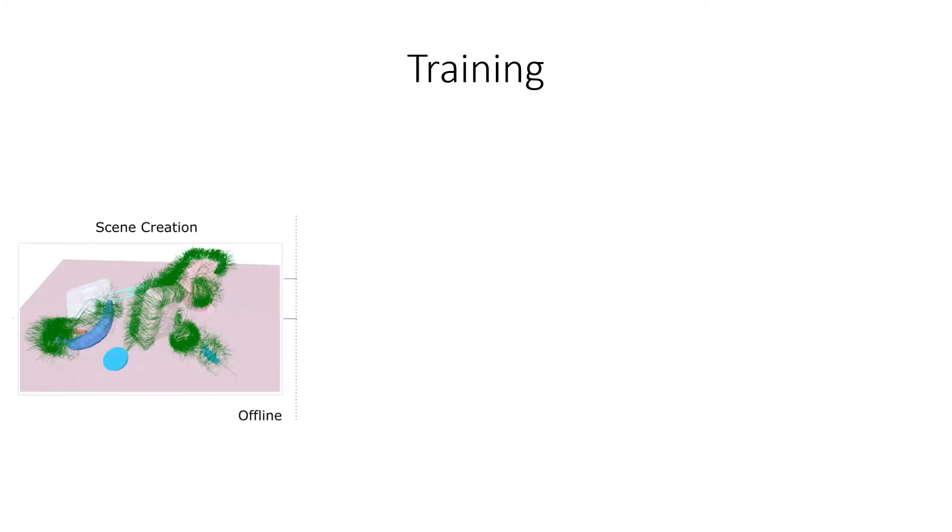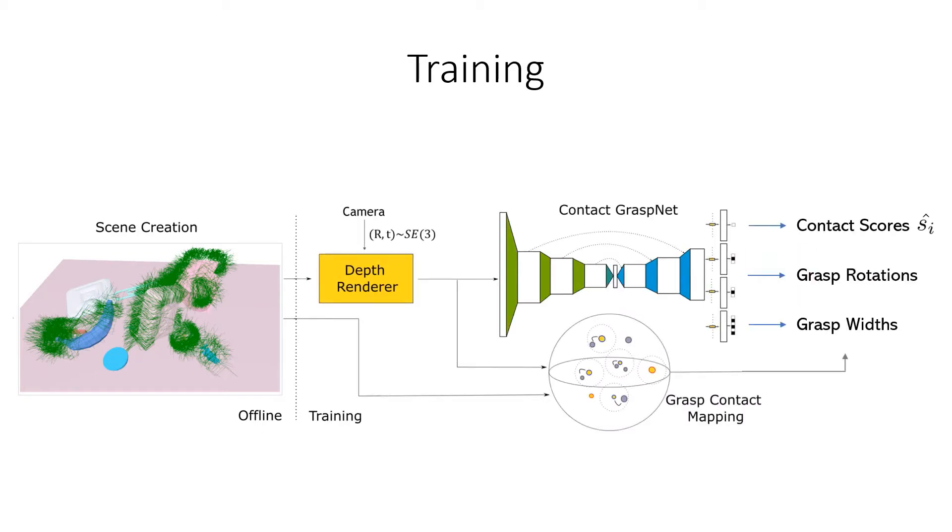For training, we create scenes with the meshes and physics simulated grasps from acronym. Colliding grasps are filtered out. Online we render random point clouds from these scenes and perform the contact grasp mapping. For every rendered point, we compute the closest mesh contact. If this mesh contact is within a 5mm radius, we label the rendered point as successful and adopt the grasp pose.